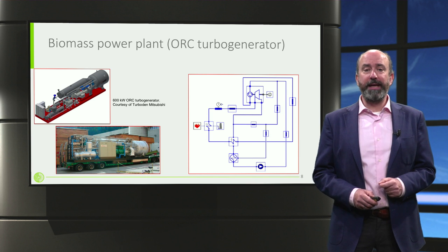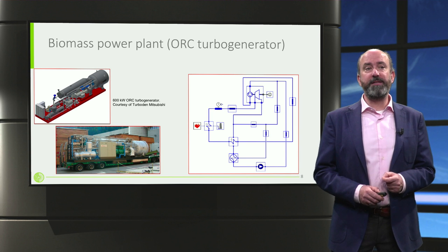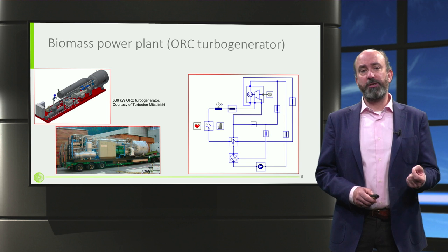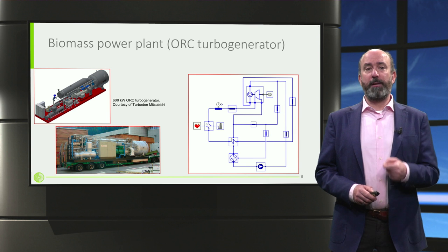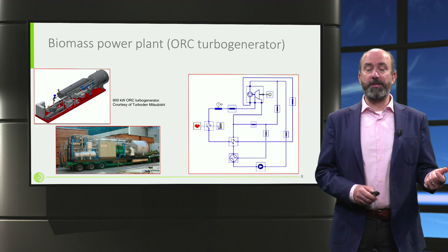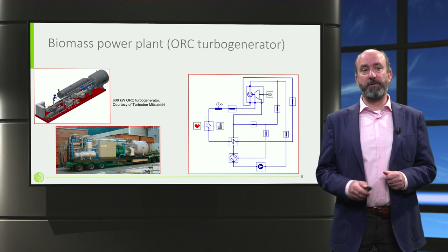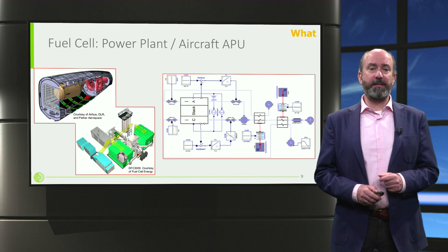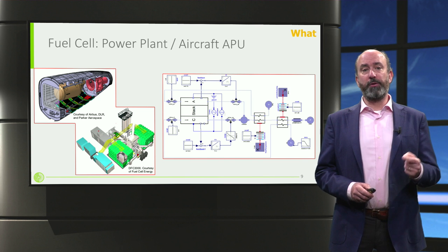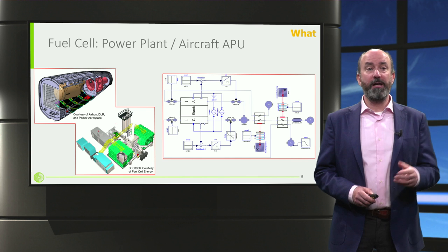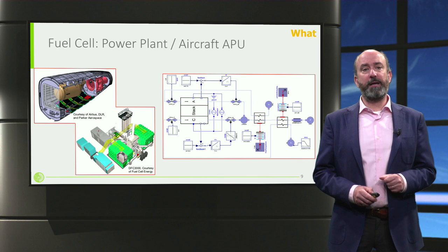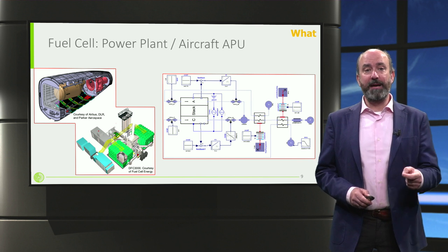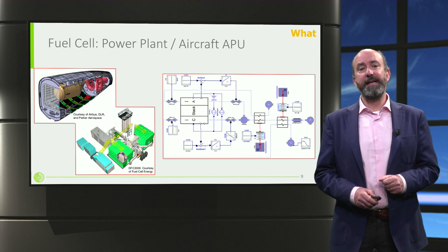For terrestrial applications, something I am very fond of is the organic Rankine cycle turbo generator — a turbine system for electricity generation that can use renewable energy as its primary thermal energy source, making it extremely relevant today. A fuel cell is also a very modern energy conversion system based on electrochemical reactions. It can be used both on board an aeroplane or as a power plant, and you see here the graphical user interface of a Modelica model — you will hear a lot more about Modelica in the coming modules.